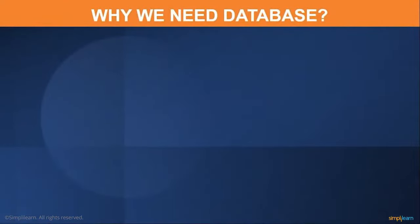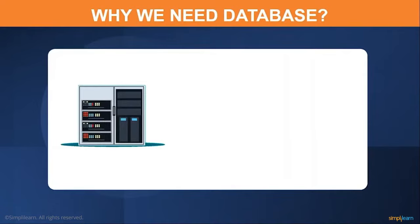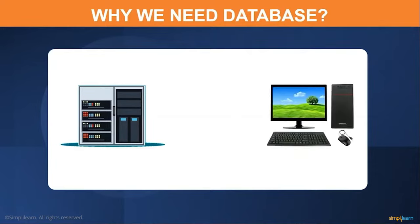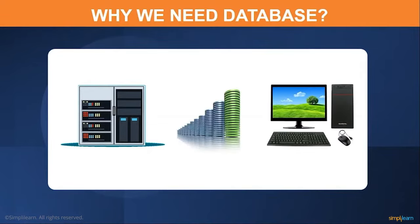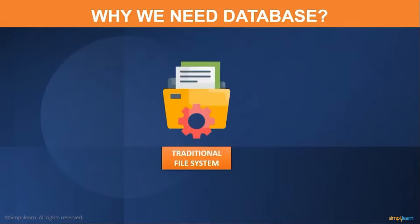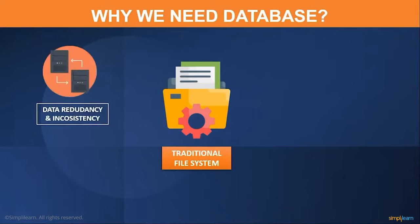Why do we need a database? Database came into existence in the early 1970s, but before that all data was stored in computer files. As technology kept advancing, it became difficult for computers to handle the increasing number of files and the growing volume of data. The so-called traditional file system was no longer able to store and retrieve data efficiently. Let us now see some of the limitations caused by the traditional file system. Data redundancy and inconsistency — redundancy means when the same data is duplicated and repeated in different locations, leading to excess storage and eventually inconsistency, where data in separate files does not match with each other.